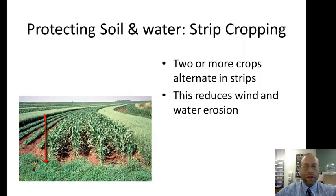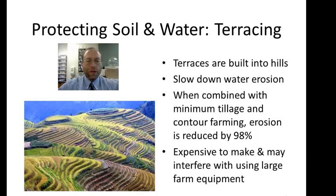Strip cropping involves alternating different types of crops in strips, which reduces both wind and water erosion. Terracing creates flat terraces cut into sloped soil, slowing water erosion because water cannot run straight down the slope. When you combine minimum tillage, contour farming, and terracing, the erosion rate is reduced by 98 percent. However, terracing is expensive to make and may not work well with large farm equipment.